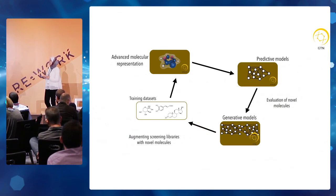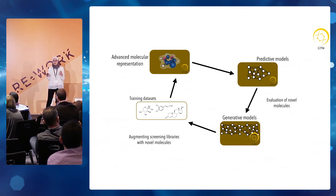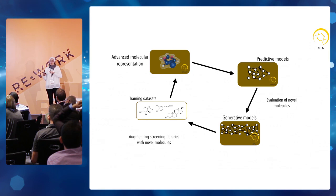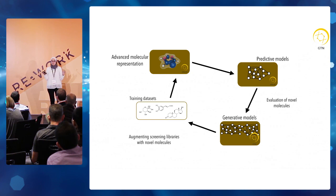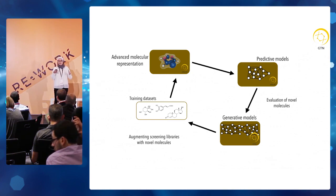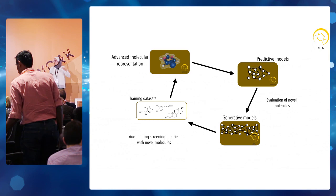This is how our pipeline looks. We start by training on data sets of molecules currently represented as strings or graphs. We advance this representation to the next level — basically the wave function. Then we build specific networks that look like traditional deep neural networks, but we replace some of the components with tensorial layers, allowing us to handle this very high-dimensional input space. We also build special auto-encoders with tensorial layers to create novel molecules and search this huge space of 10 to the 80 possible molecules.